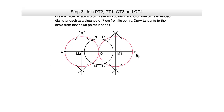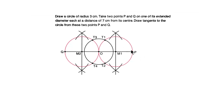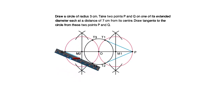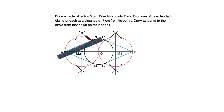Now join PT1, PT2, QT3, and QT4 to get all four tangents. So T1P, T2P, T3Q, and T4Q are the required tangents. If the problem has not asked you to measure, there is no need to measure the tangents.